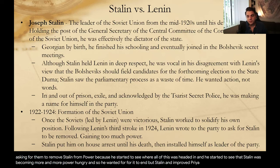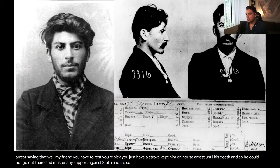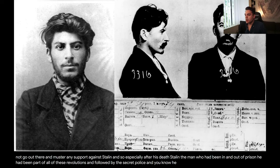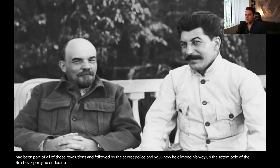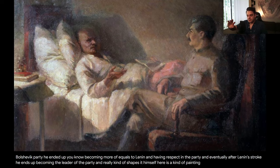Stalin, in a preemptive move, put Lenin on house arrest saying: my friend, you have to rest, you're sick, you just had a stroke. He kept him on house arrest until his death. So Lenin could not go out there and muster any support against Stalin. Especially after his death, Stalin — the man who had been in and out of prison, part of all of these revolutions, followed by the secret police — climbed his way up the totem pole of the Bolshevik party, became more of an equal to Lenin, and eventually after Lenin's stroke ended up becoming the leader of the party, really shaping it himself.